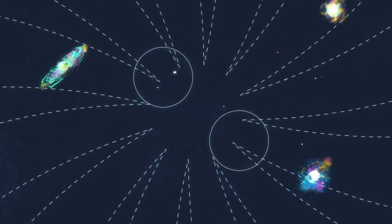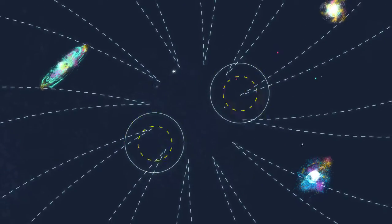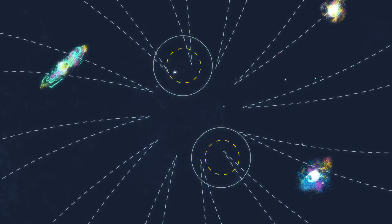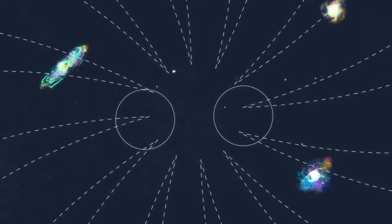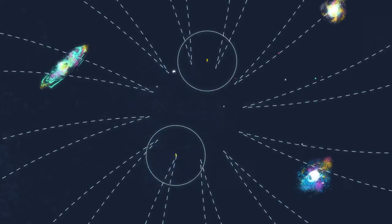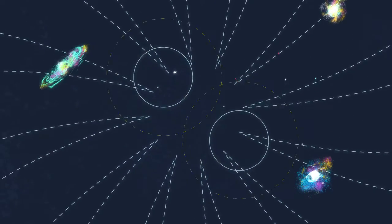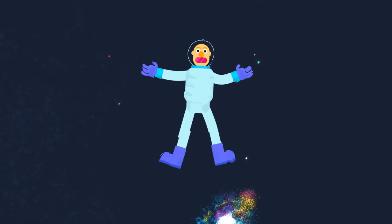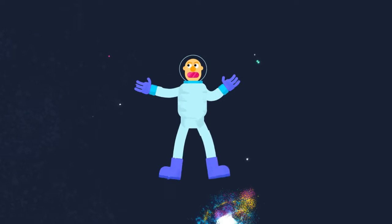But instead, what the black holes do is they churn up literally the shape of space and time around them. You can imagine like fish swirling in a pond creating waves in the water. And they're not visible, because it's not a form of light, but if you were floating nearby, you would be squeezed and stretched by the passing of this ripple in the shape of space-time.